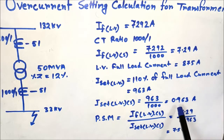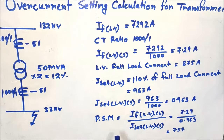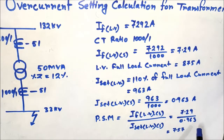This is the current setting value for the LV overcurrent relay. Now, the plug setting multiplier (PSM) for the IDMT curve is the relay fault current divided by the setting value. The fault current sensed by the relay under maximum fault conditions is 7.29 amperes, and I_set is 0.963 amperes. Therefore, PSM equals 7.29 divided by 0.963, which comes to 7.57.